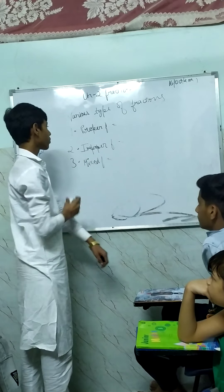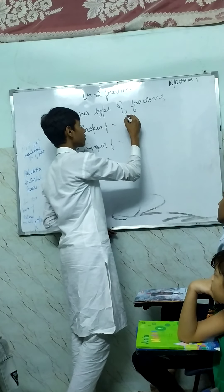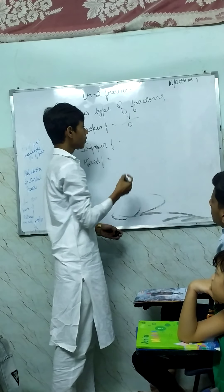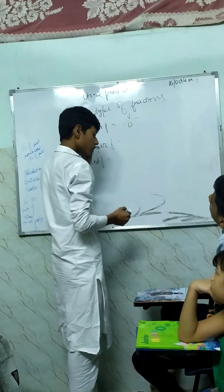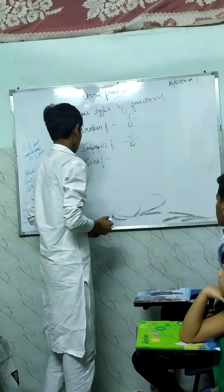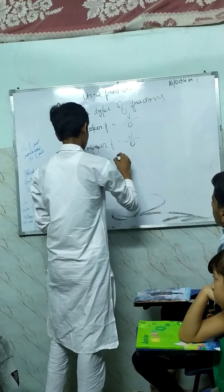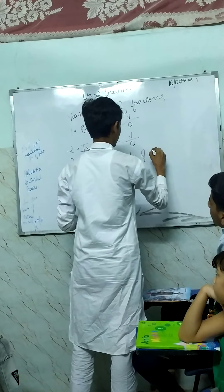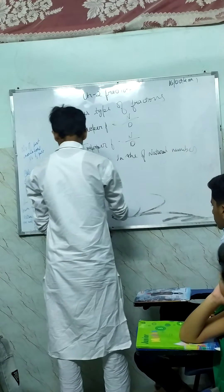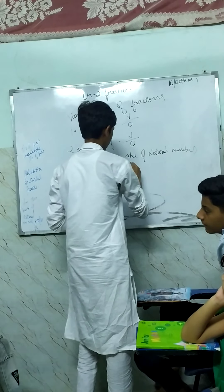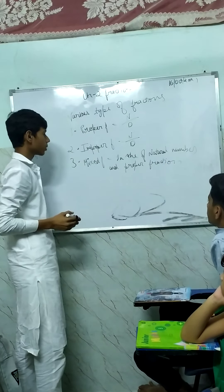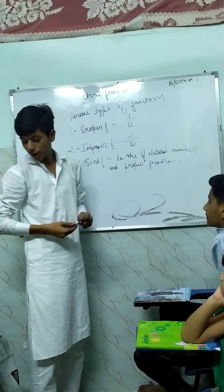What is a proper fraction? In a proper fraction, the denominator is bigger than the numerator. In an improper fraction, the numerator is bigger than the denominator. And a mixed fraction is the sum of a natural number and a proper fraction. These are the various types of fractions.